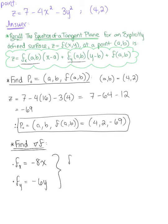Now evaluating this at the given point, we have the partial derivative at the point (4,2) is negative 8 times 4, which is minus 32. The partial derivative with respect to y at the point (4,2) gives us negative 6 multiplied by 2, which is minus 12.